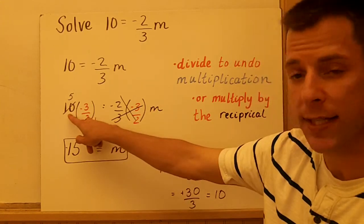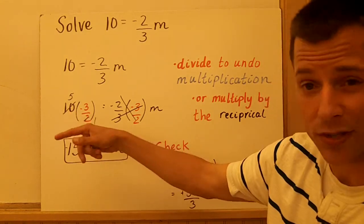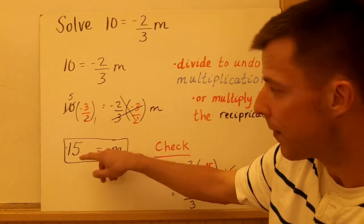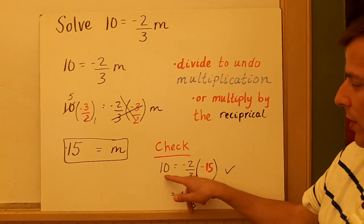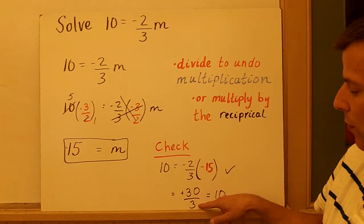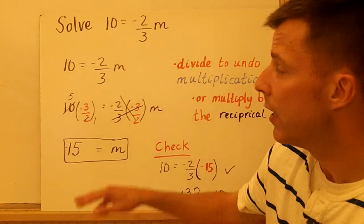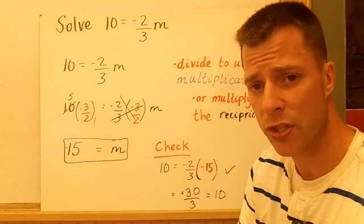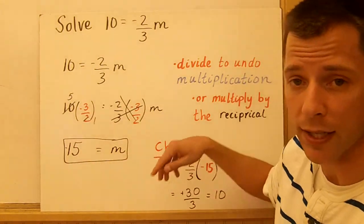And 10 times negative 3/2 is negative 15. You can do some simplification there. 2 goes into 10 five times, 2 goes into itself 1. So we get negative 15. You can check your answer. Does 10 equal negative 2/3 times negative 15? Well, that's equal to 30/3, which is 10. So it does work out, and that's our solution. It's important with some of these fractions, sometimes the mental math can get a little more challenging, especially working with fractions, and that's why we continue to use the algebraic method instead of guessing and checking.